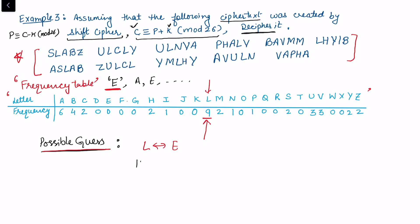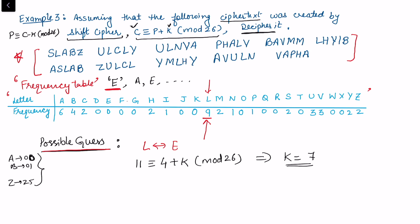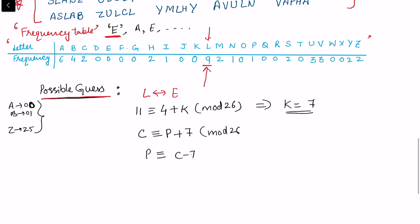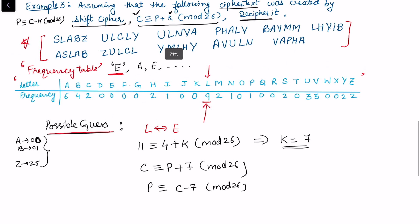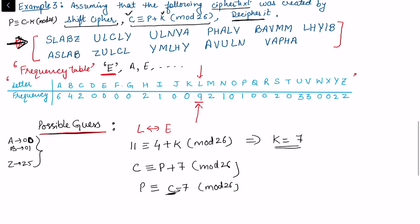Our guess is that L in the cipher text corresponds to E in the plain text, since E is the most frequent letter in English. L corresponds to 11 in the standard numbering, and E corresponds to 4. Using C ≡ (P + k) mod 26: 11 ≡ (4 + k) mod 26, giving k = 7. Now that we know k = 7, we compute P ≡ (C − 7) mod 26 for each letter.